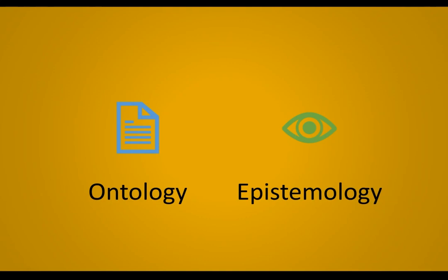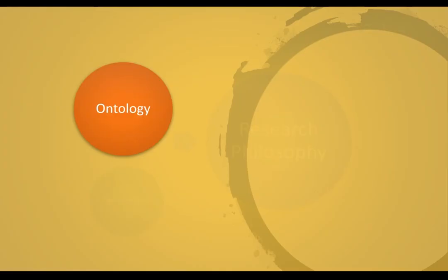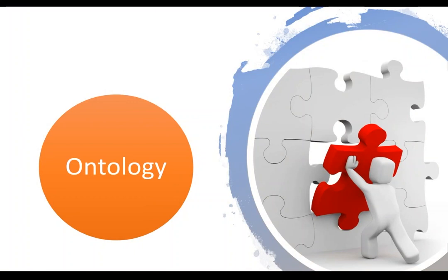Before that, we should understand that ontology and epistemology shape your research philosophy. The research philosophy is mainly dependent on these two components, so it is important for us to understand each of these concepts. Let us start with understanding ontology. Ontology is basically answering the questions: What is reality? And what shapes the reality?